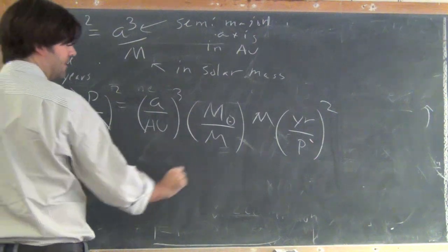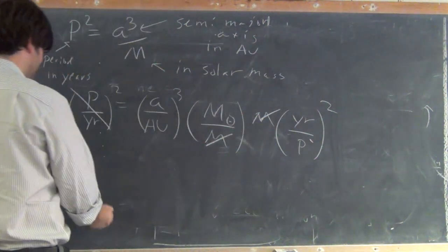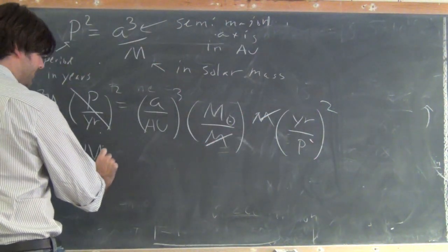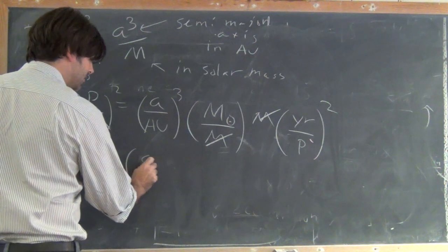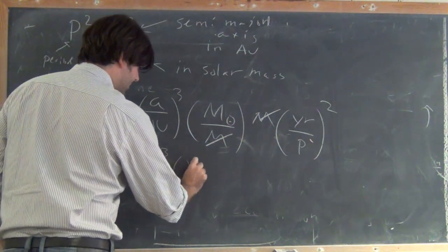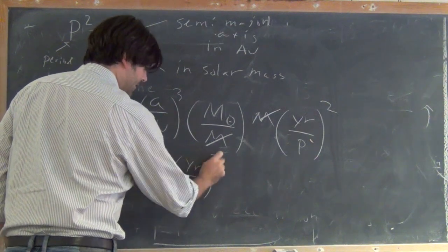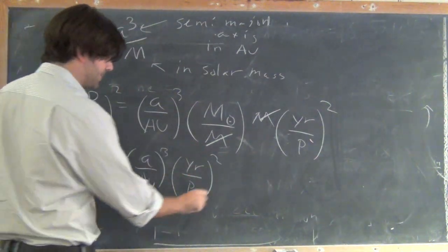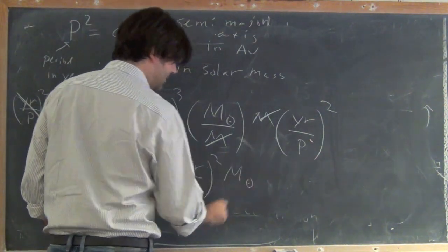That cancels off this, this cancels off that, and we're left with the expression that m is equal to the semi-major axis in astronomical units cubed times the period in years, one over that squared, and the whole answer is in solar masses.